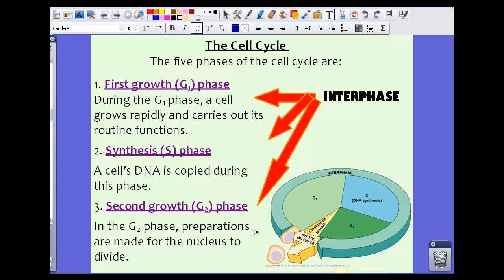Our third stage is something called the G2 phase, or the second growth phase. In this particular phase, preparations are made for the nucleus to divide. So remember, we have our first stage, second stage, third stage. And all three of these stages put together are called interphase.